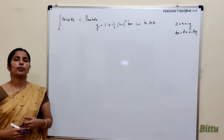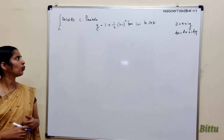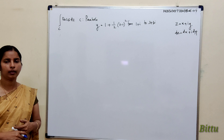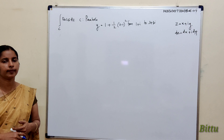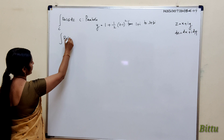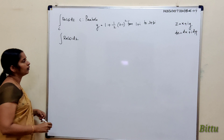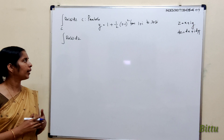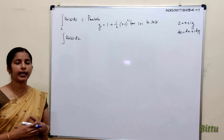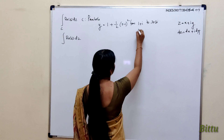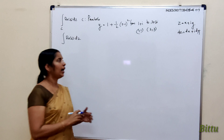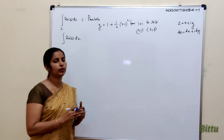Next, evaluate integral over C of Re(z) dz, where C is the parabola y = 1 + ½(x−1)² from 1+i to 3+3i. Here we integrate the real part of z along a portion of the parabola. The point 1+i corresponds to (1, 1) and 3+3i corresponds to (3, 3). We evaluate this integral from (1,1) to (3,3).